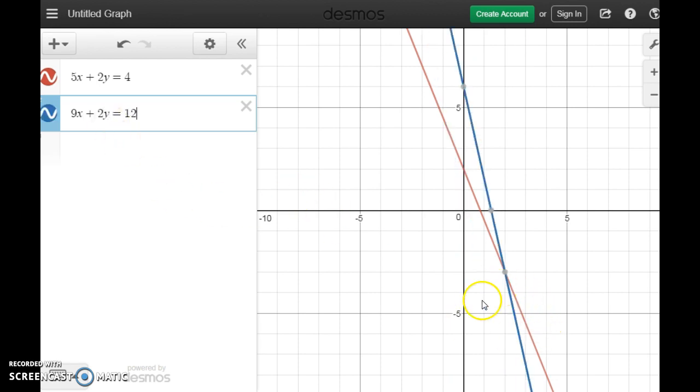Hey, there are my lines. And again, you can see they cross one time. There's my intersection. So that's the solution to these systems.